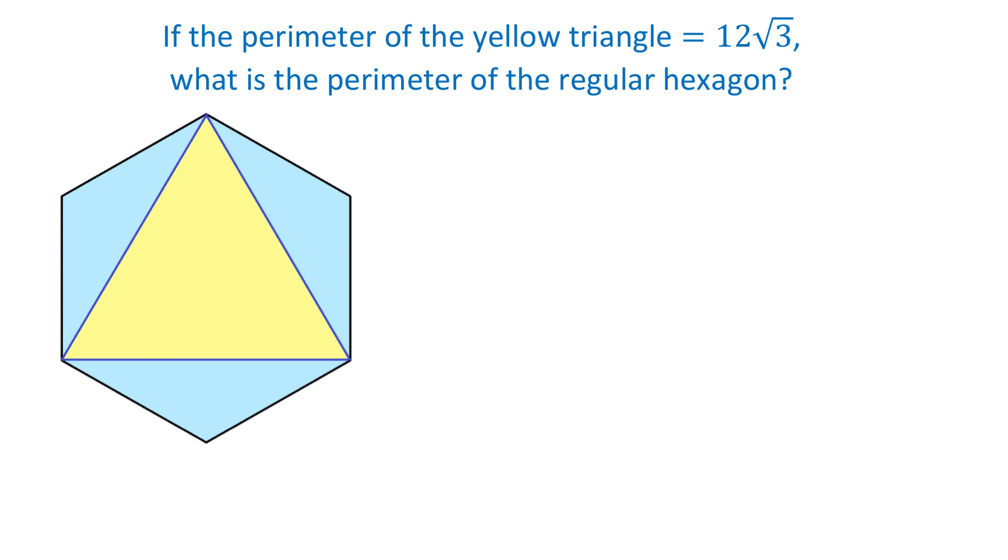In a regular hexagon all the sides are equal and all the angles are also equal. The yellow triangle is formed by three short diagonals of the regular hexagon. And because in this hexagon all the sides are equal and all the angles are equal, then these three diagonals are also equal. Then we can say that this triangle is an equilateral triangle.